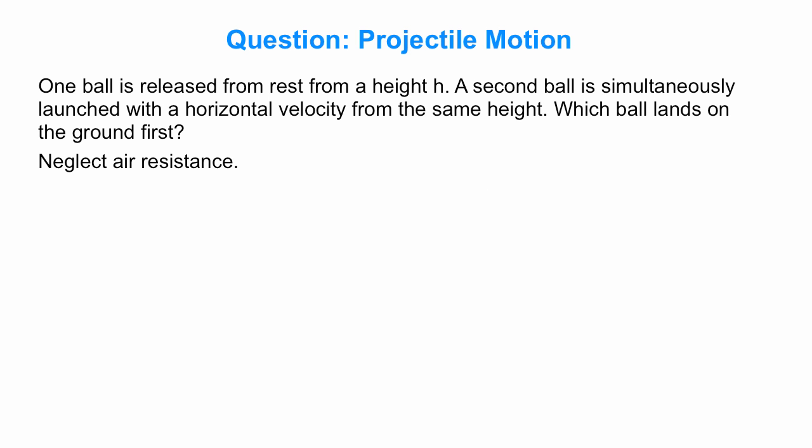So we're going to do this. We're going to take one ball and just drop it from rest and let it fall through a height h. A second ball will release from the same height, but we'll give it an initial horizontal velocity. No initial vertical velocity, only horizontal velocity. Which ball lands on the ground first? Neglect air resistance.